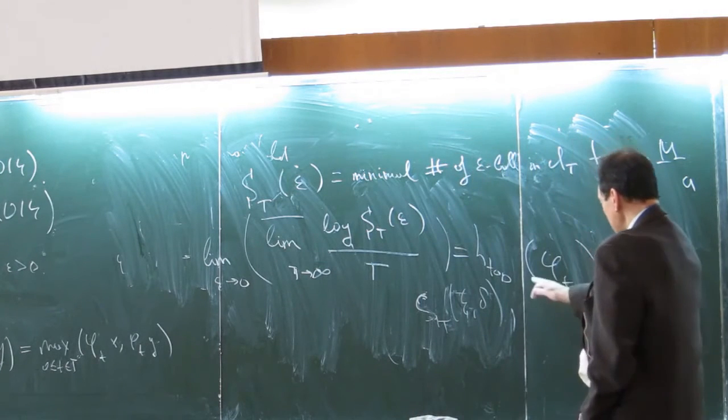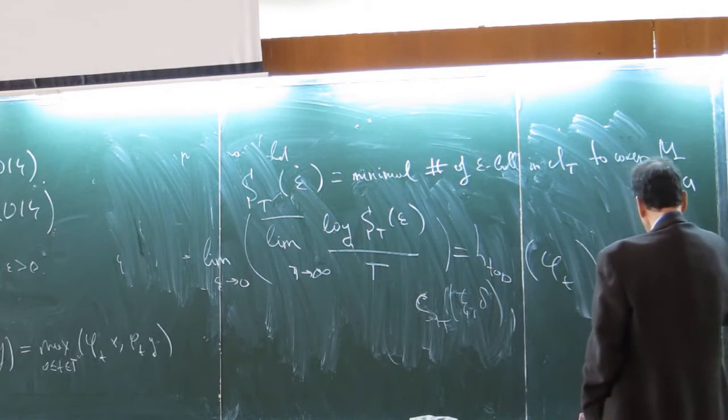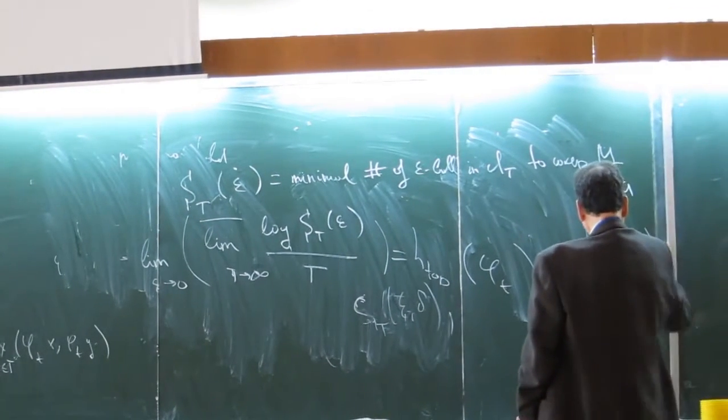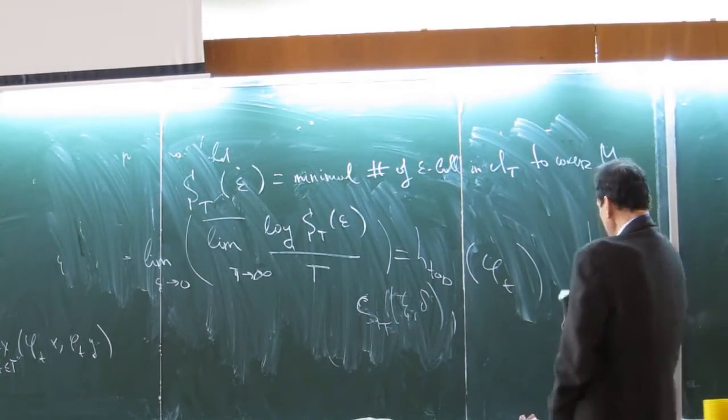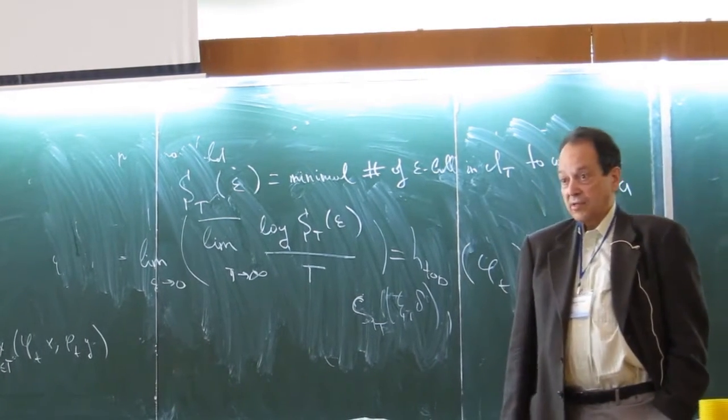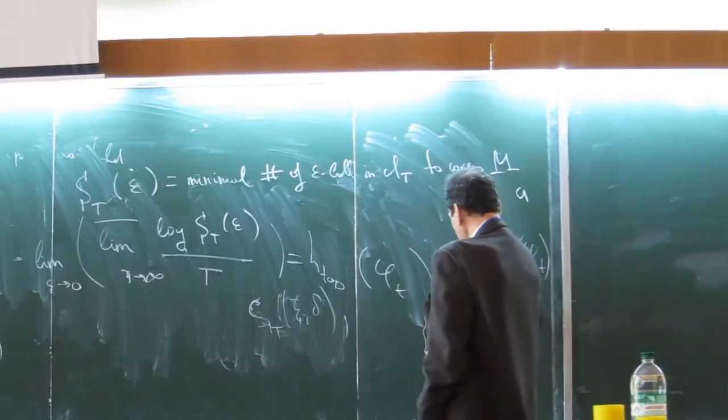The original definition of Kolmogorov entropy looks very different from this, but I will say in other words why it's very simple. If instead of trying to cover the whole space, you cover all space except for a set of measure delta, small fixed measure delta, and do the same thing, and then let epsilon go to zero and delta go to zero, you get a quantity which is very similar and which turns out to be, under certain assumptions, equivalent to the famous Kolmogorov entropy.